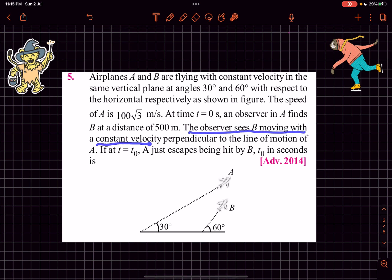The observer sees B moving with a constant velocity perpendicular to the line of motion. So the observer sitting in A sees B coming towards it perpendicularly. We need to find the time at which A just escapes being hit by B. The relative distance between them is given to be 500 meters at t equals 0 seconds.